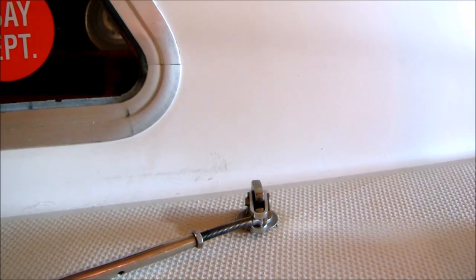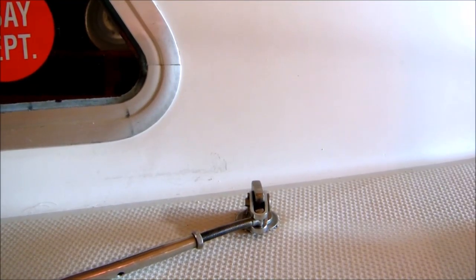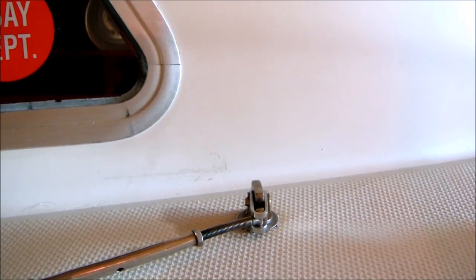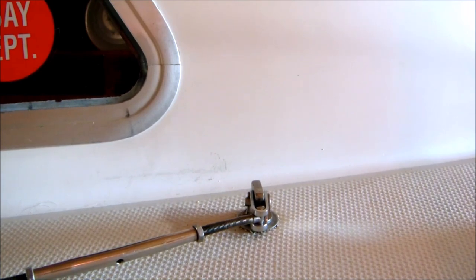This is how your shroud turnbuckle toggles and T-bolts should work if the chain plate bolts are rotated properly, that is, toward the mast step, not rotated parallel to the centerline of the boat for stepping.